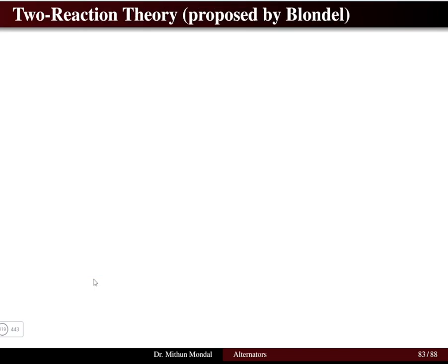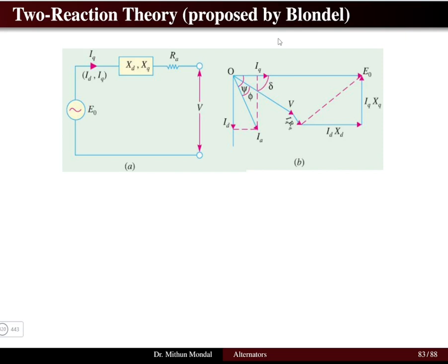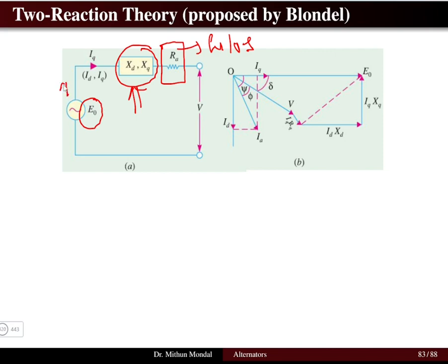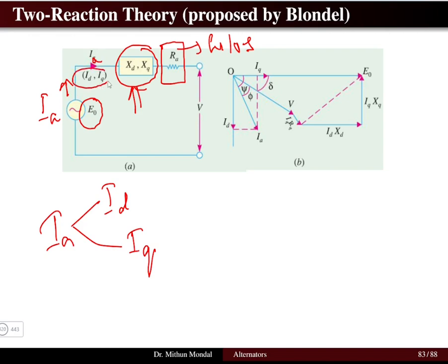Based on the two-axis theory, we use the two-reaction theory proposed by Blondel. There will be two reactances: the direct axis reactance and the quadrature axis reactance. The armature resistance is constant and deals with the copper loss of the machine. The induced EMF is E0, and the armature current Ia is divided into two components: the direct axis component id and the quadrature axis component iq.